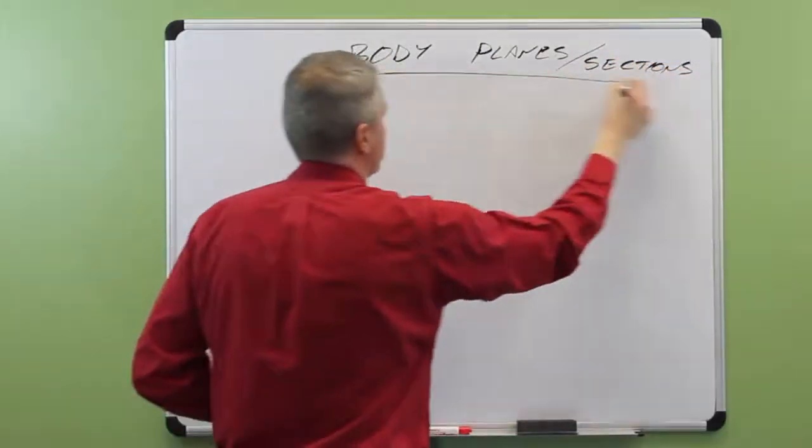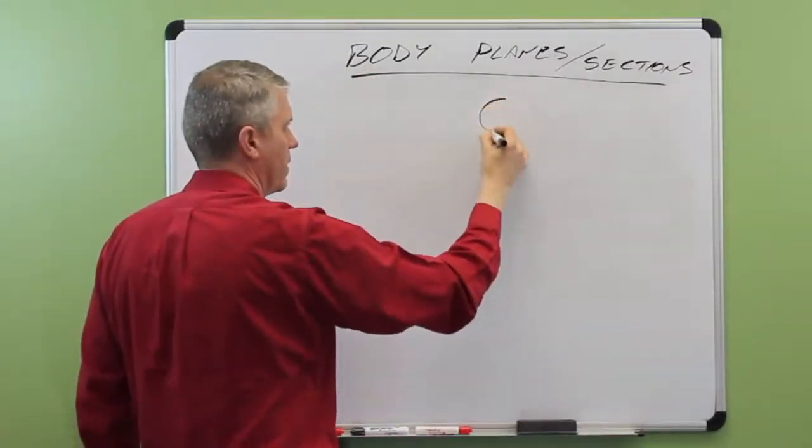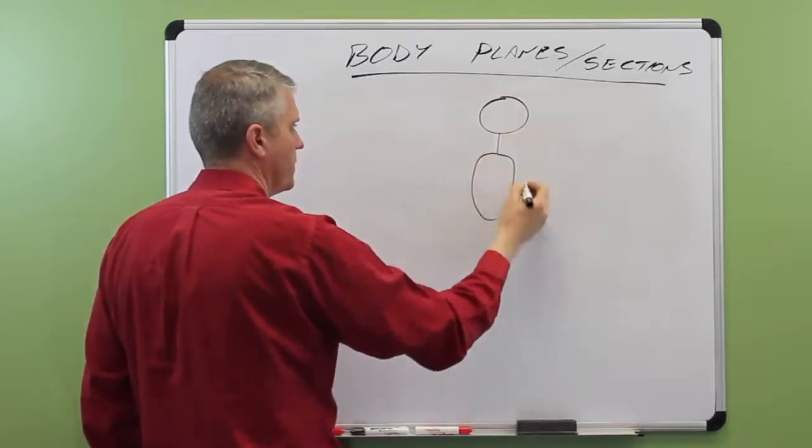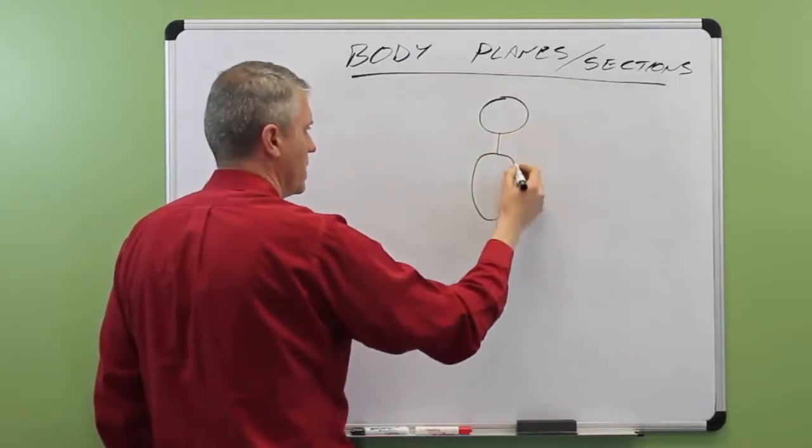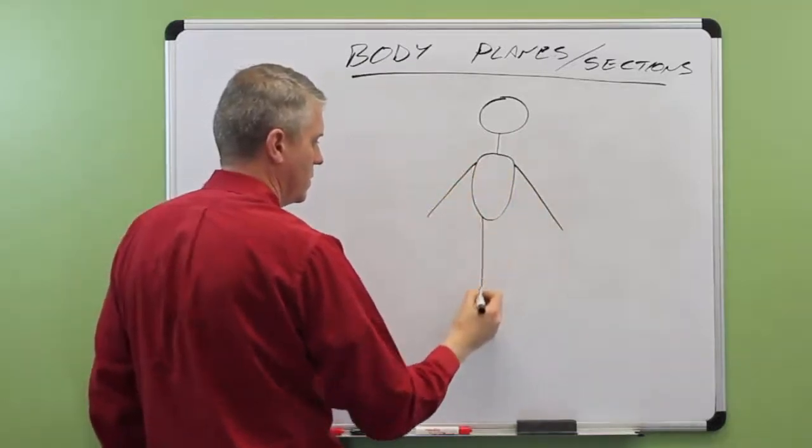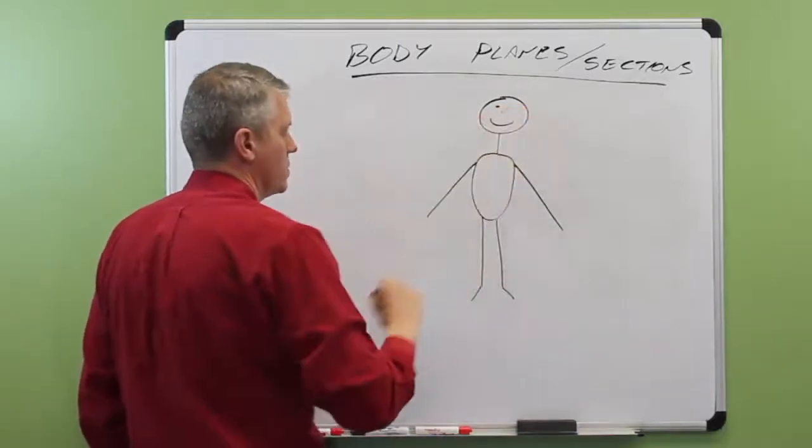So body planes or sections. And I like to do this with a little kind of stick figure guy. I'll give him a bit of a torso, though. So imagine he's standing here in anatomical position, arms out to his sides and so on. There's his face.